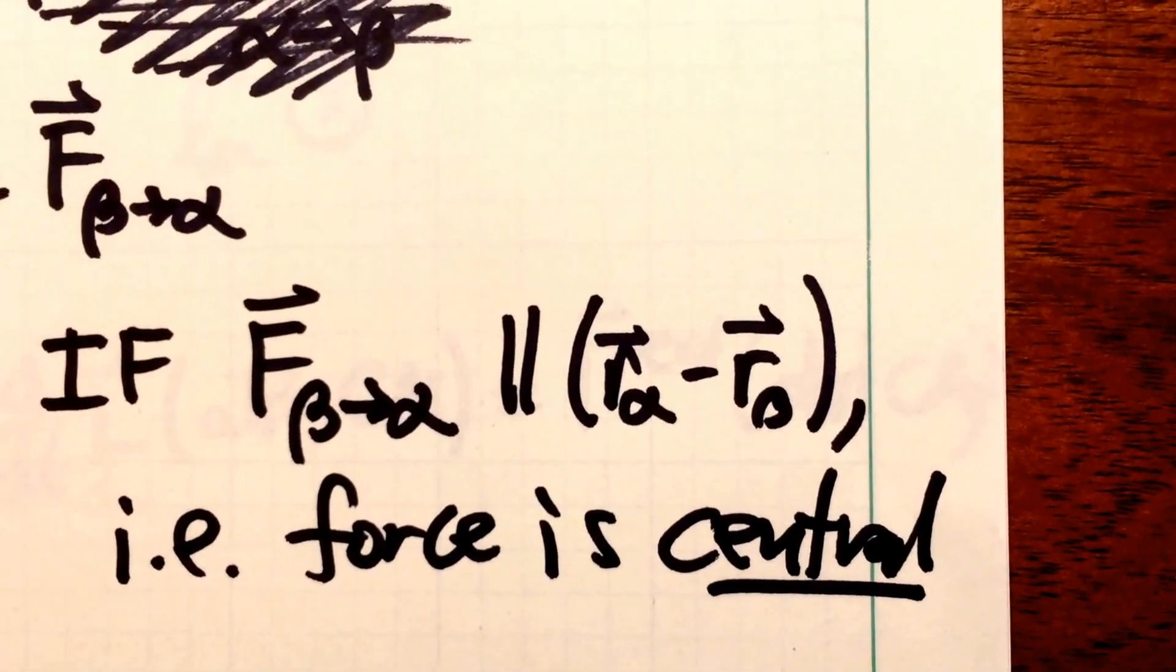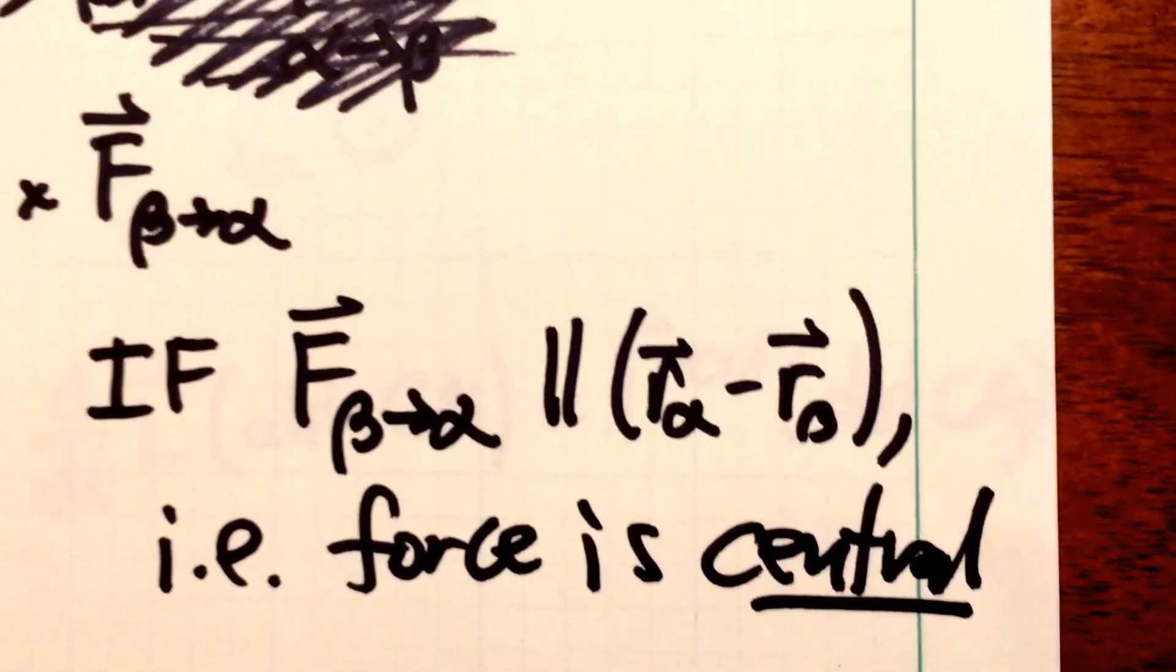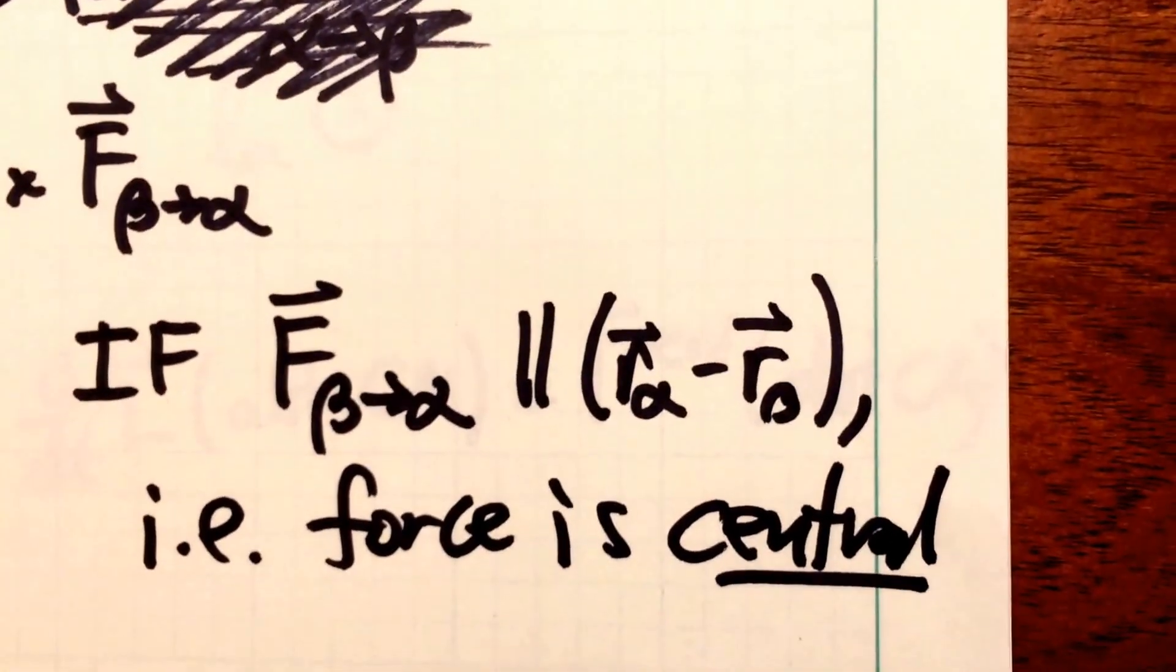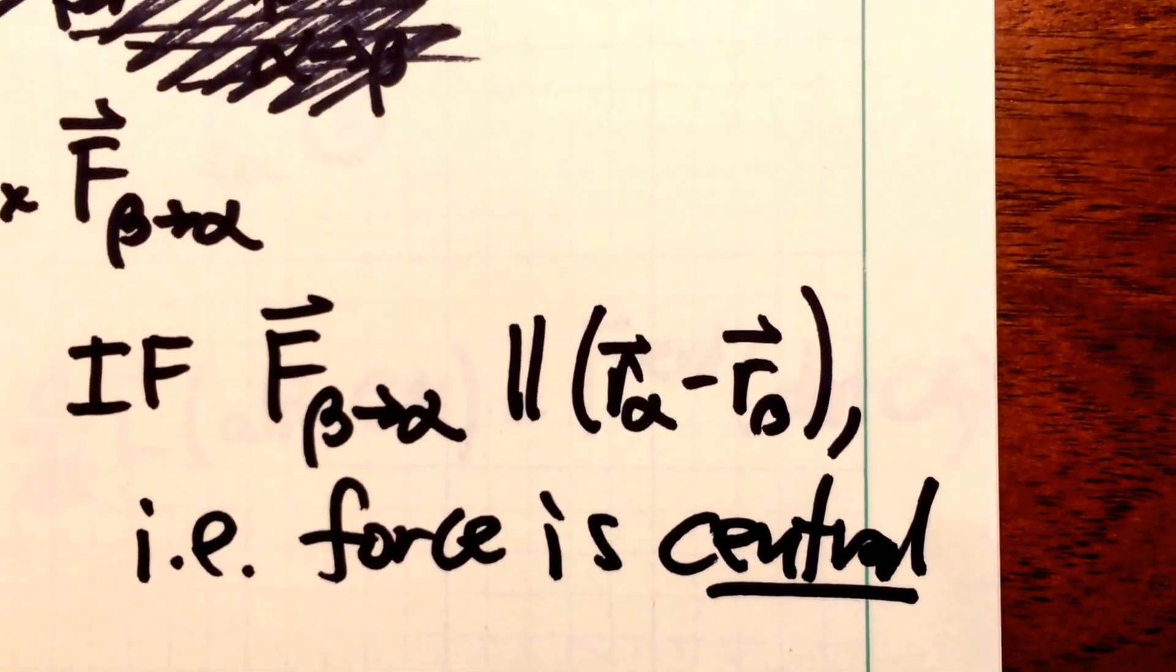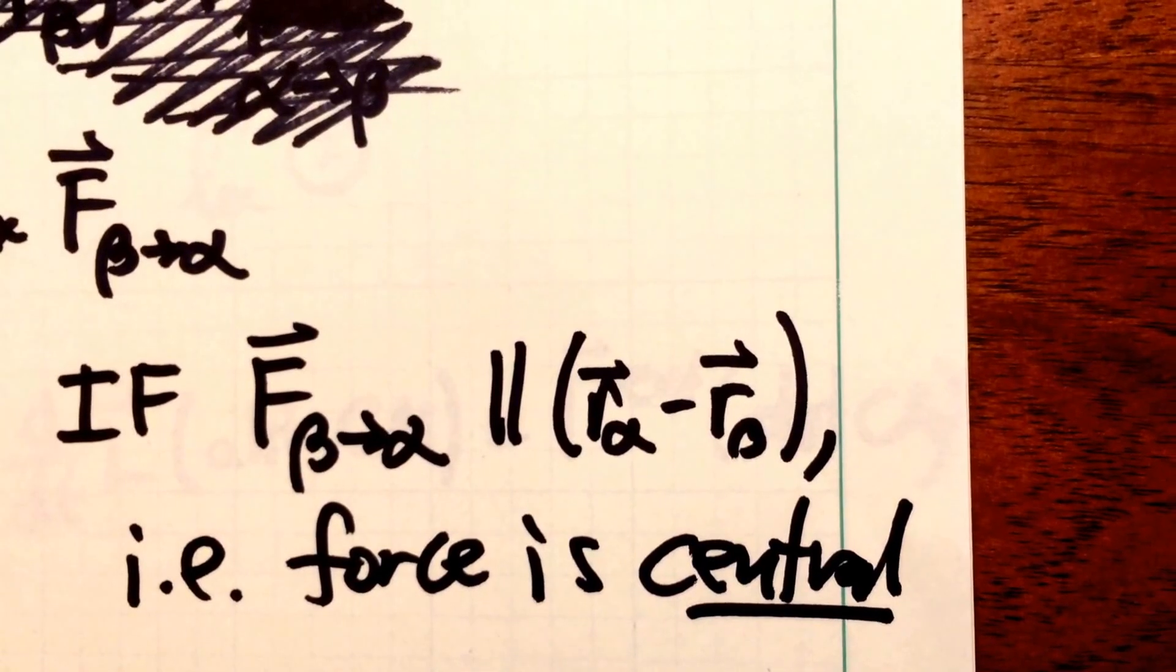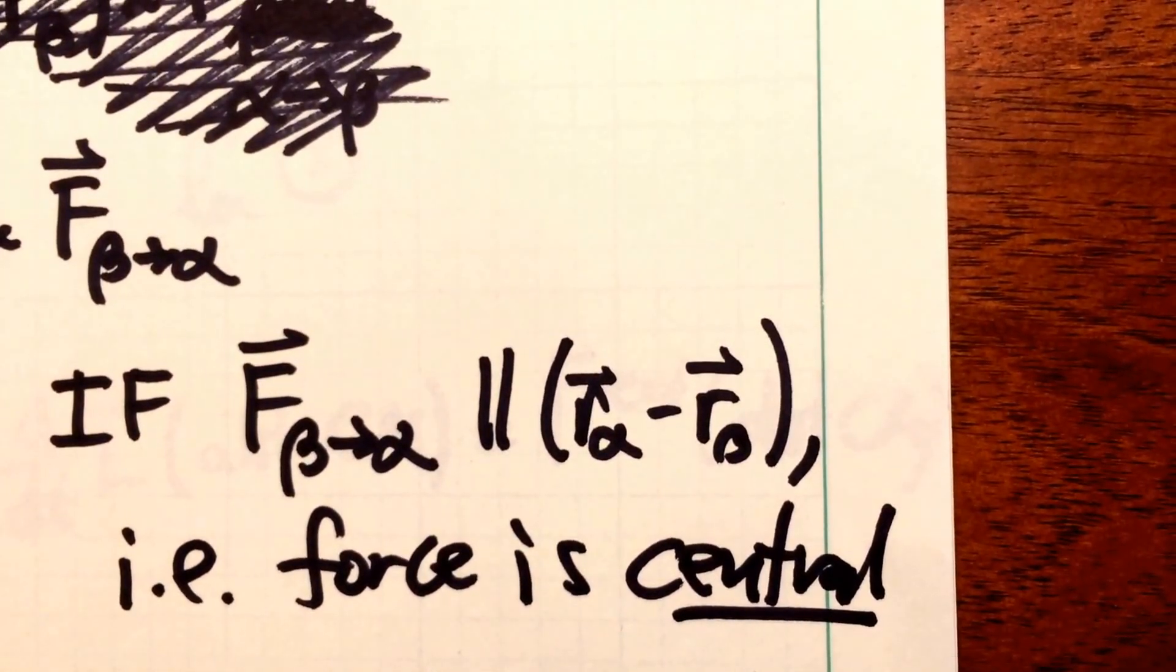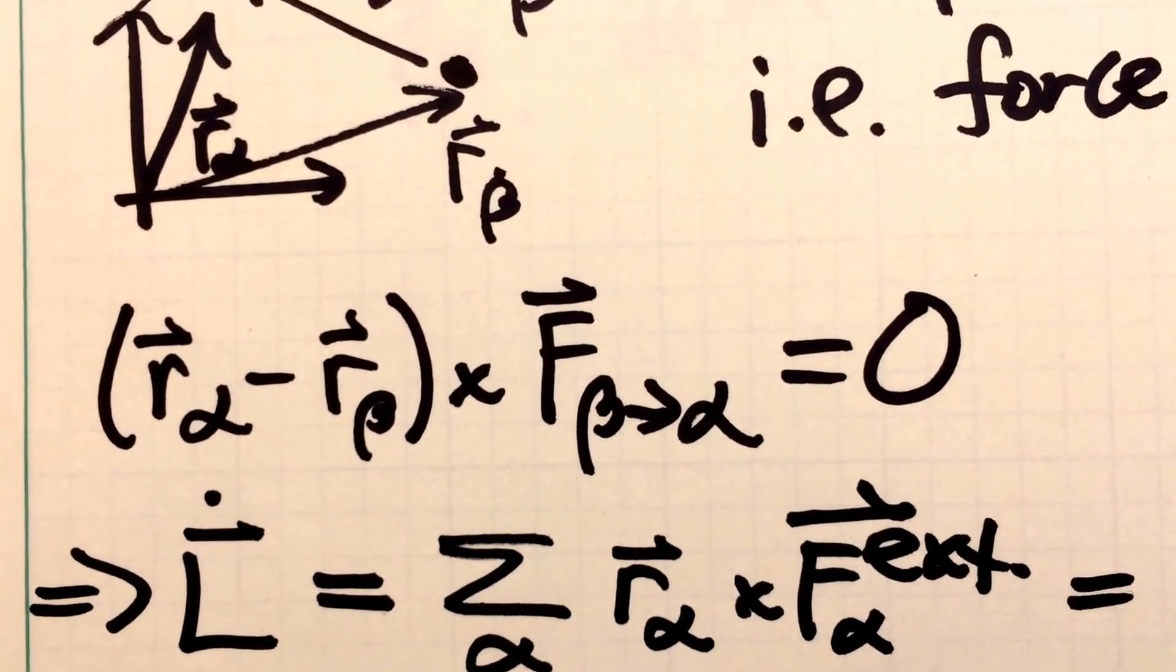Now if we imagine that all the internal forces of the system are central, which is to say that they all point from one particle to the other on which the particle is acting, then we have a nice simplification here. So if the forces are central inside the body, which is very often the case, we get a nice simplification. Namely that that cross product there is zero.